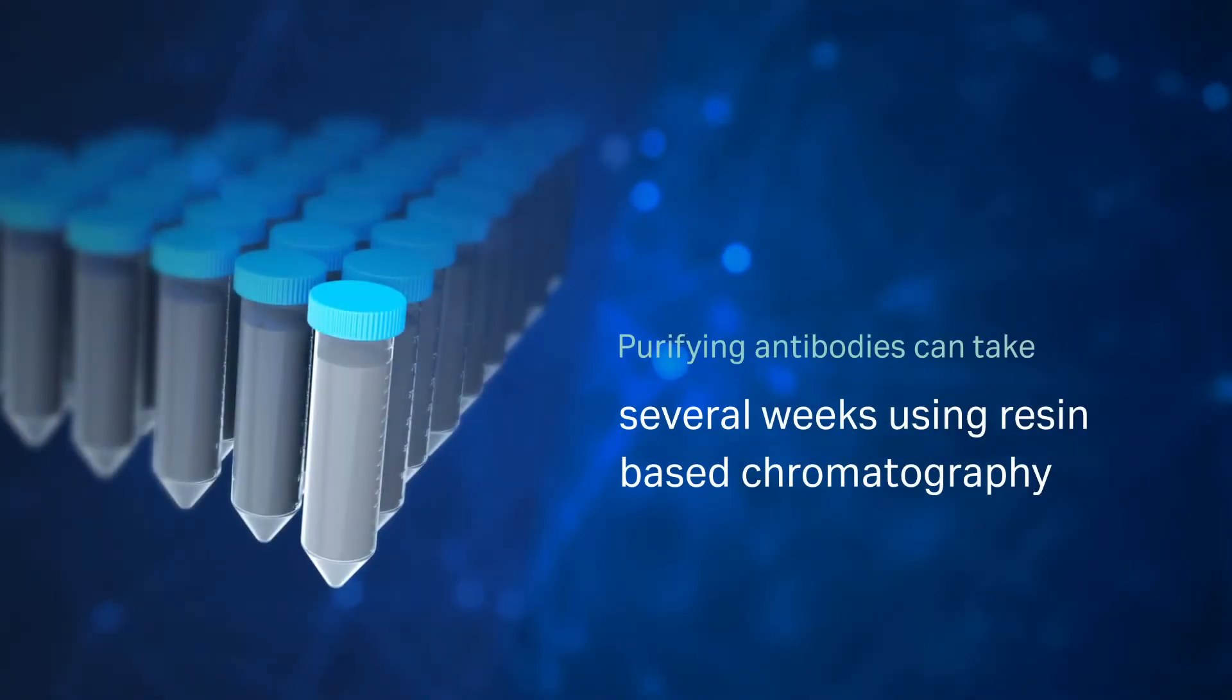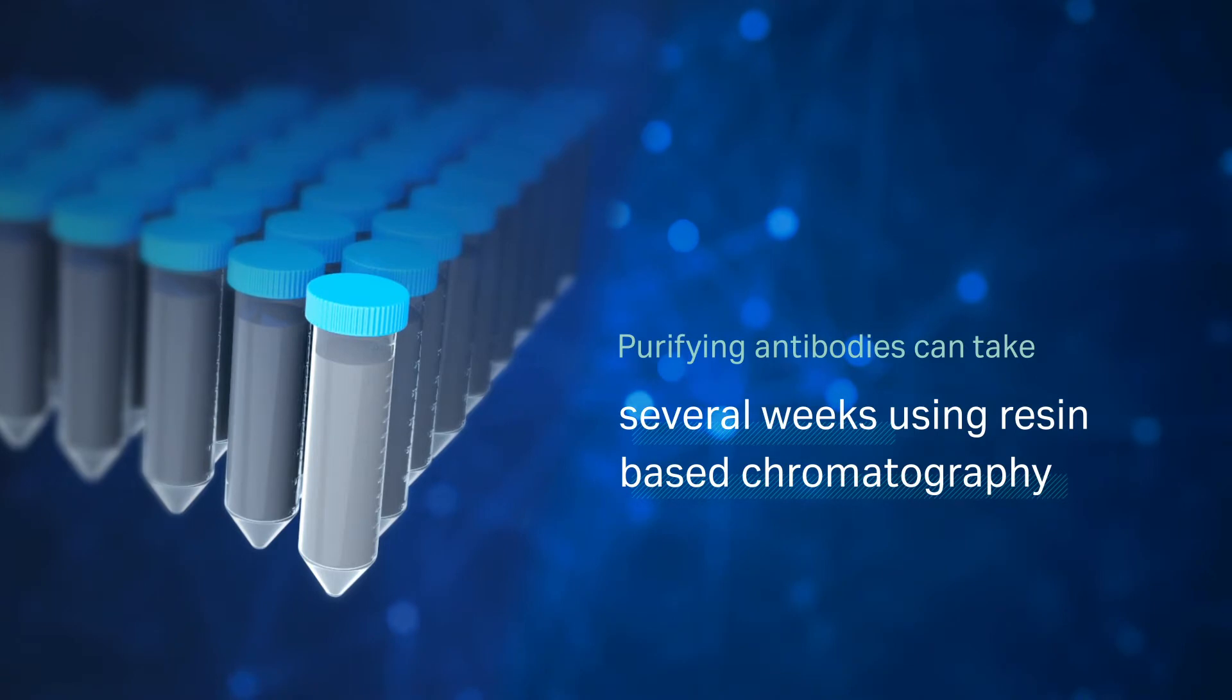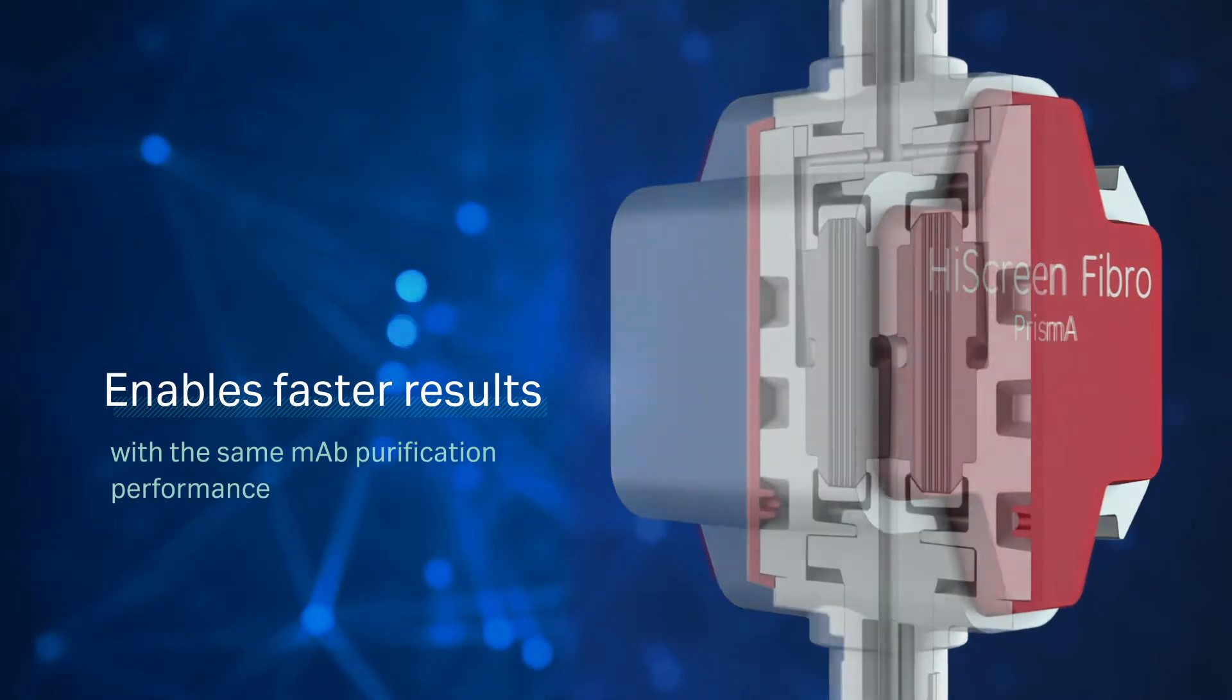Purifying antibodies in all process conditions can take several weeks using traditional chromatography. Fibrochromatography enables faster results with the same MAB purification performance.